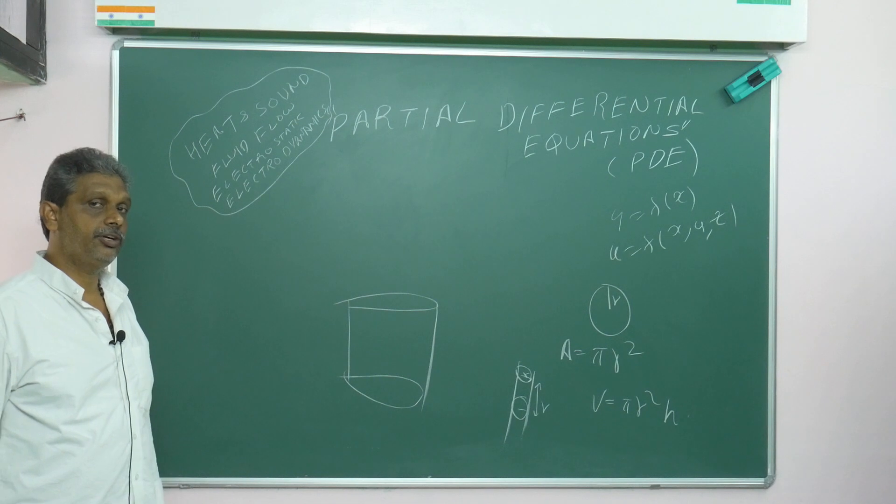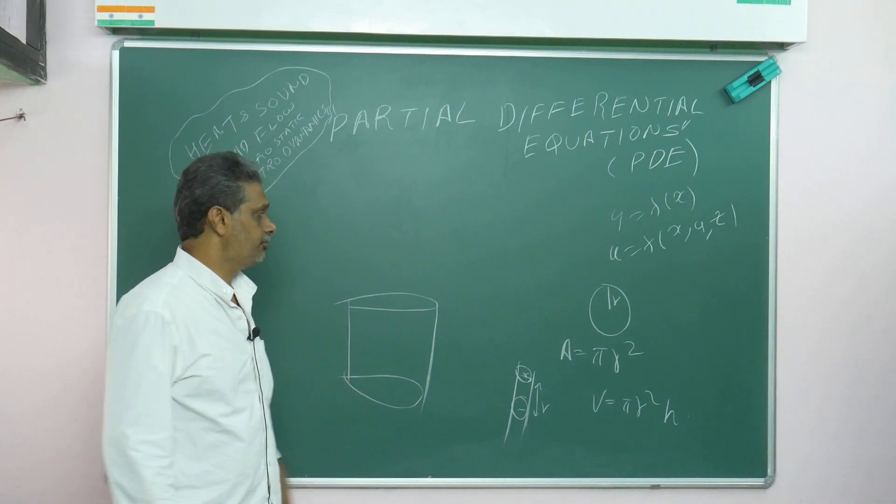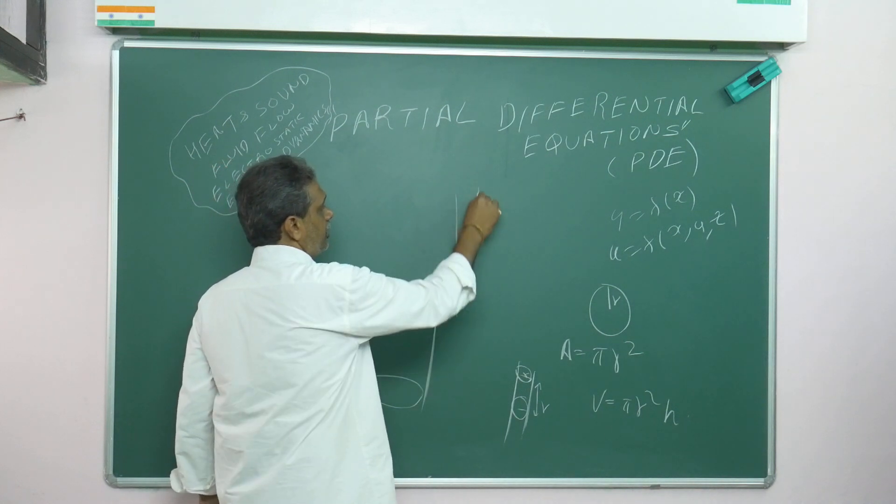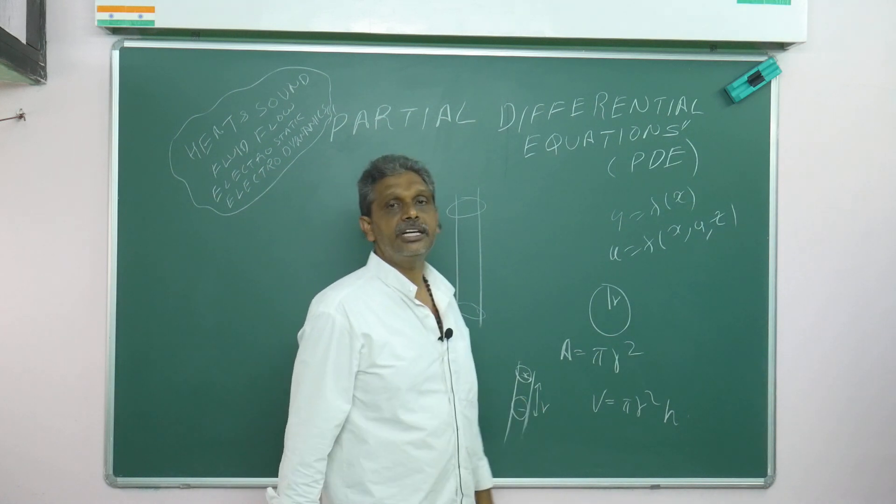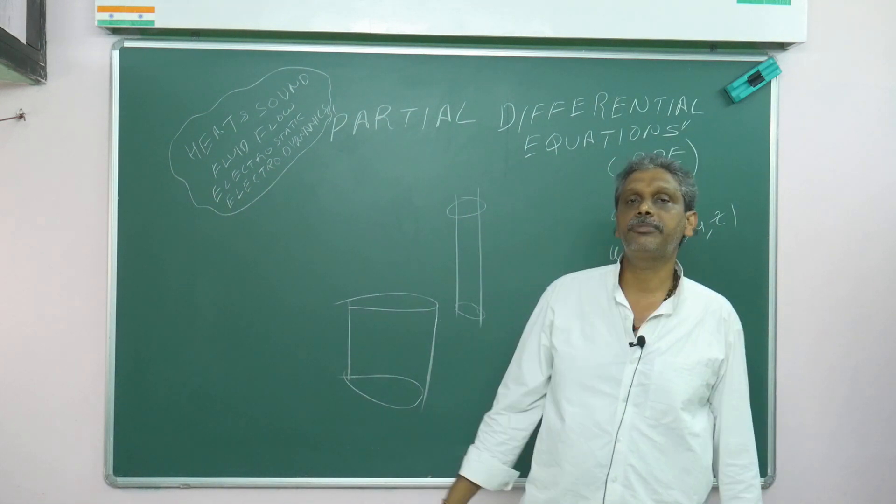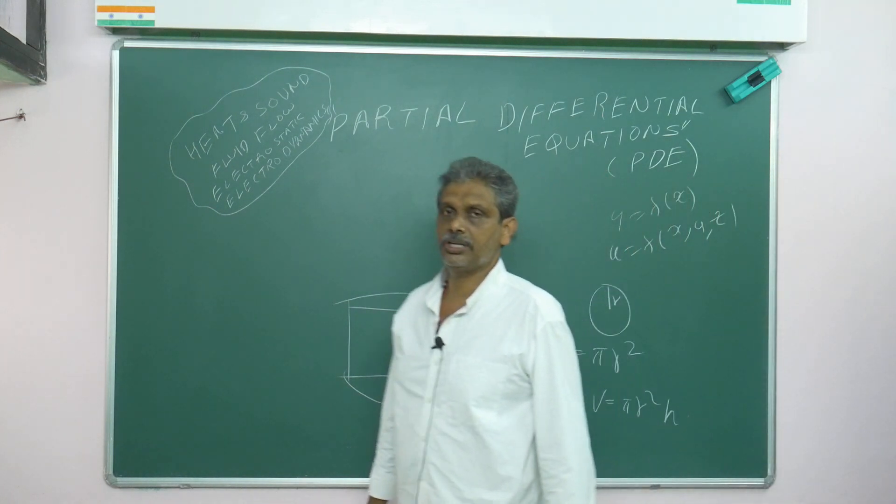Suppose I don't want to disturb r but increase only h. Then I'll get a thinner cylinder. Here, I'm treating only one as a variable and the remaining as constants. These are all familiar concepts from your earlier classes.